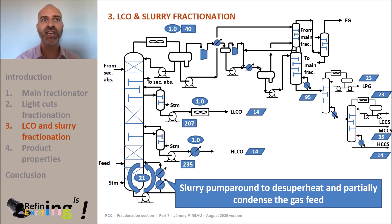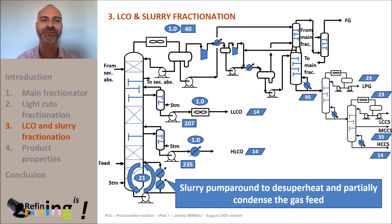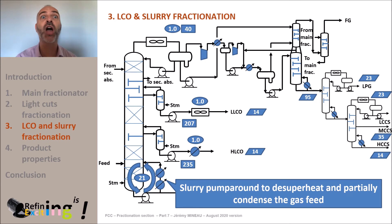A typical duty of 20 giga calories per hour is extracted from the tower bottoms thanks to this pump-around implementation. With this heat, we can preheat the feed to the reactor. As mentioned in the MOOC dedicated to the reaction section, 12 giga calories per hour were needed to heat the feed up to 220 degrees C before injecting it into the reactor. We can also use these calories to produce steam at a rather high pressure level due to the high temperature of the slurry. In general, we do both.